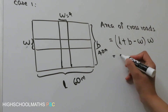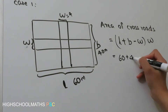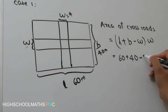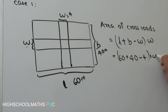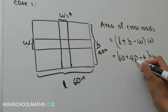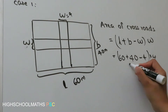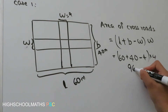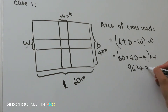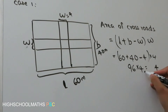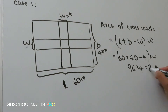Here, the calculation is 60 plus 40 minus 4, which gives 96. So 36 plus 2 equals 38 — this is the area in square meters.